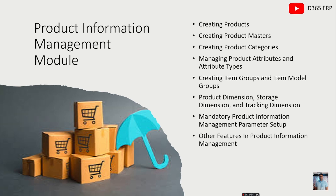In this module we will be covering the following topics: creating products, creating product masters, creating product categories, managing product attributes, attribute types, item groups, item model groups, product dimensions, storage dimensions, tracking dimensions, and the mandatory Product Information Management parameter setups.